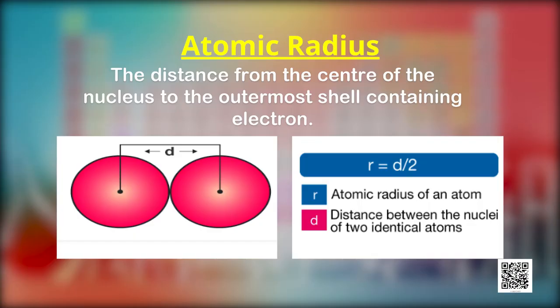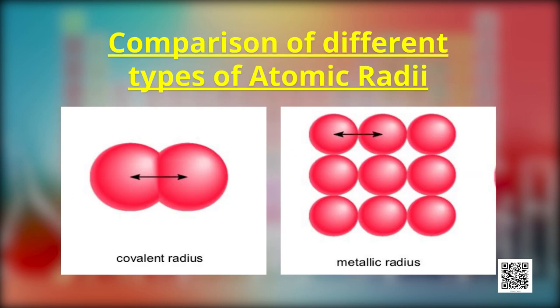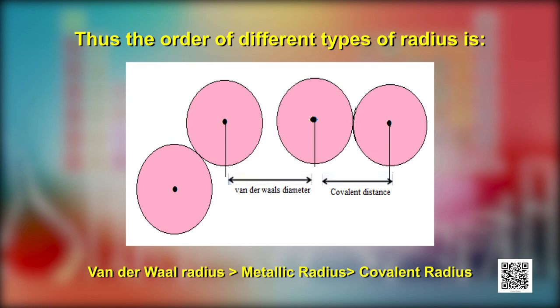It is equal to one half of the distance between the nuclei of two atoms bonded to each other. However, bond lengths change with different types of bonding. Three types of radii are commonly used: covalent radius, defined as half the distance between two nuclei of two like atoms bonded by a single covalent bond, used for non-metals; metallic radius, which is half the internuclear distance separating the metal cores in a metallic crystal; and Van der Waals radius, which is half the distance between the nuclei of two non-bonded neighbouring atoms of two adjacent molecules in the solid state. Covalent radius is the shortest, while Van der Waals radius is the longest. We use the term atomic radius to refer to covalent or metallic radius depending on whether the element is a non-metal or a metal.